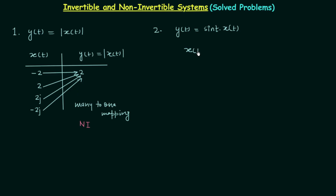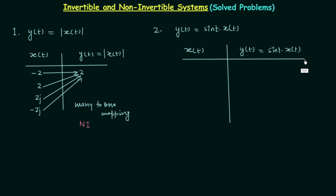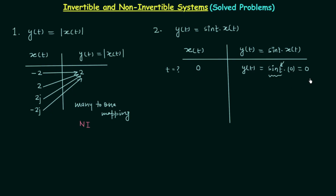First we will make the table. The first column is for the input, the second column is for the output y(t) = sin(t)·x(t). If x(t) = 0, then y(t) = sin(t)·0 = 0. We don't know the exact value of sin(t) because we don't know the time instant, but since x(t) = 0 the overall result becomes 0. So when x(t) = 0, y(t) = 0 — there is no problem.